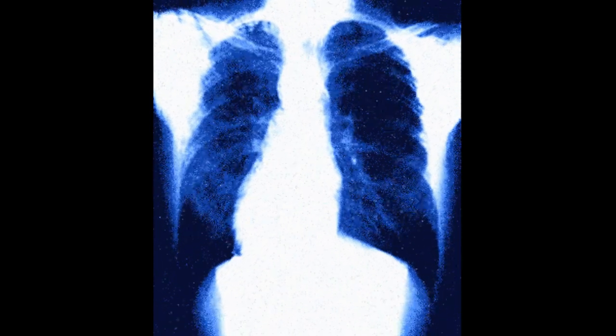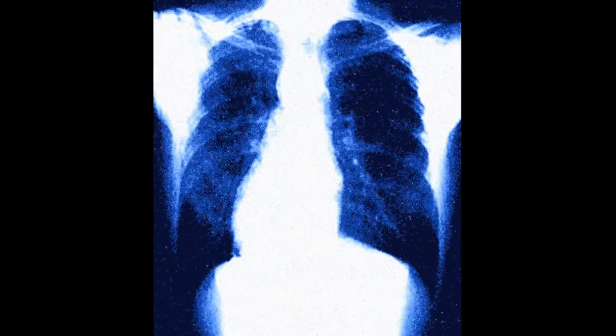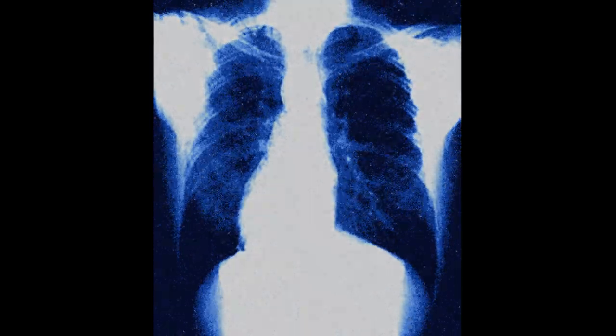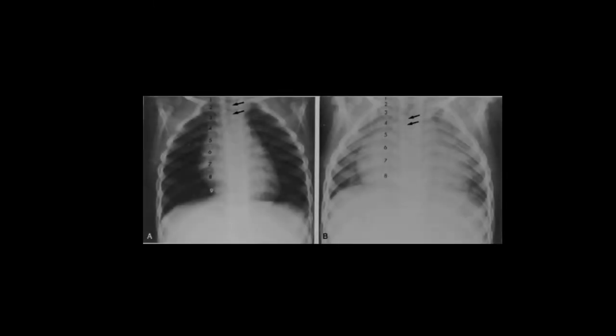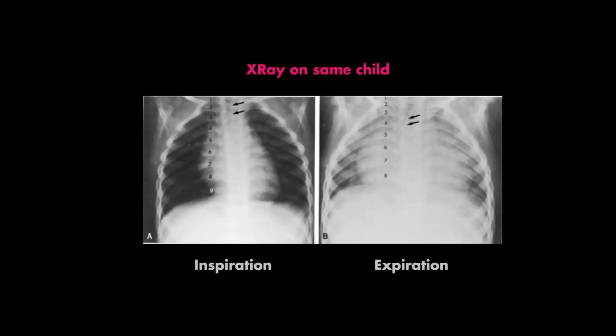Enlarged heart sizes can also be exaggerated if your chest x-ray was obtained during expiration. In this case, the thoracic diameter would be smaller in comparison to the heart, which would seem relatively larger.